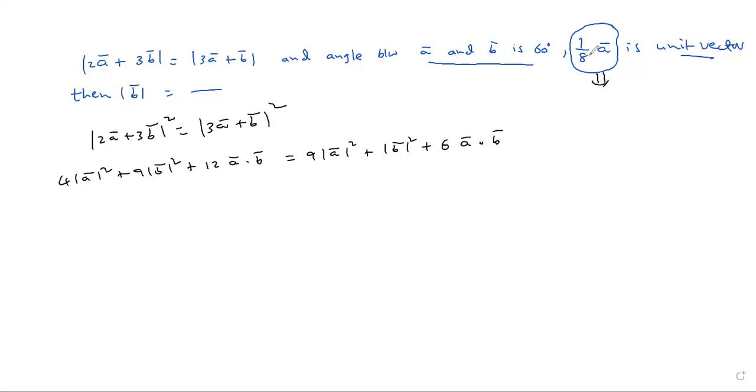First, I am taking this: 1/8 A is unit vector. That means modulus of this is 1, which gives mod A bar by 8 is 1. Mod A bar is 8. So, what is the use of this point?